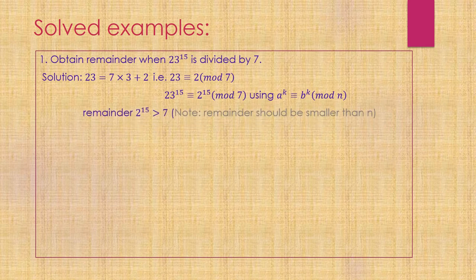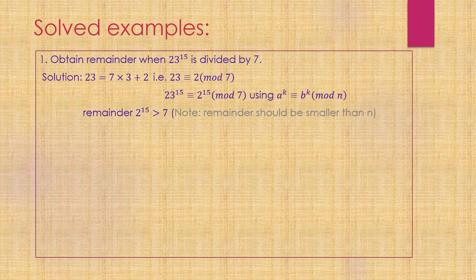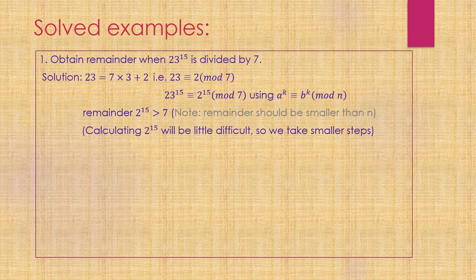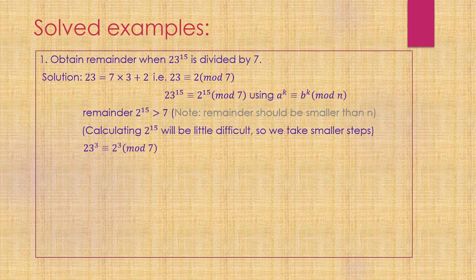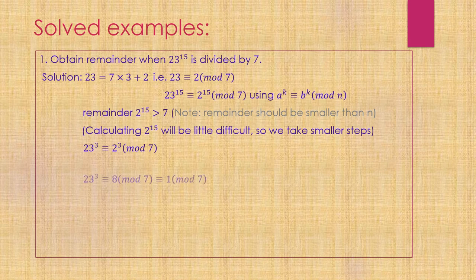Now, this remainder 2^15 is definitely greater than 7, but we want a remainder smaller than n, so smaller than 7. Calculating 2^15 will be difficult, so we'll take smaller steps. I can observe that 2^3 equals 8, which is congruent to 1 modulo 7.